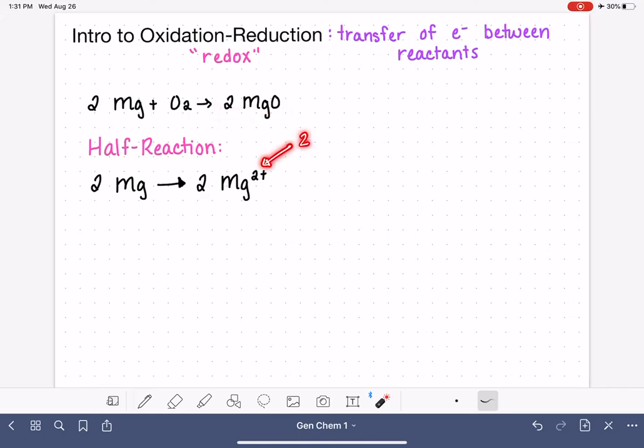Magnesium being in group 2A on the periodic table has this charge of plus 2. In order for these two magnesium atoms to be converted into magnesium ions, the magnesium atoms have to lose electrons. Each one of these magnesium atoms is losing two electrons. We have a total of two magnesium atoms, which means that altogether they're losing a total of four electrons.